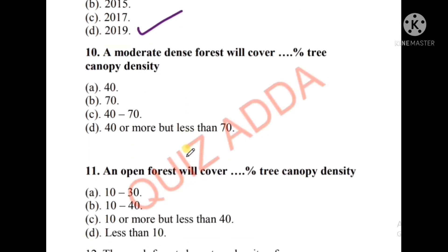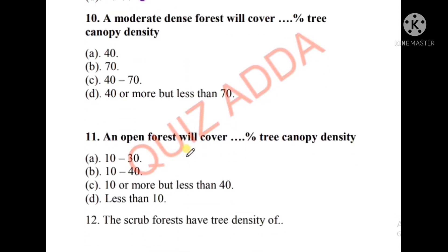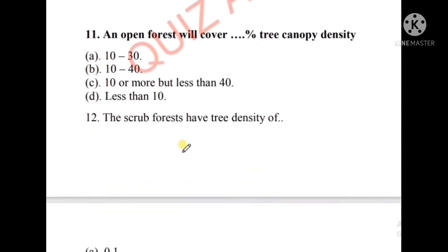Question number ten: A moderate dense forest will cover how much percentage of tree canopy density? The options are 40, 70, 40 to 70, or 40 or more but less than 70. The right answer is option C, that is 40 to 70 percent of tree canopy density.